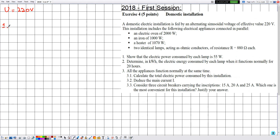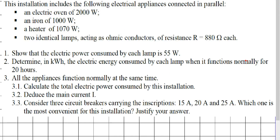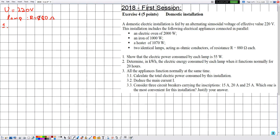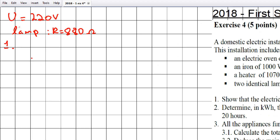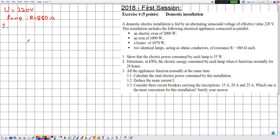In part one, the resistance of the identical lamps is given as R equal to 880 ohms. They are asking us to show that the electric power consumed by each lamp is 55 watts. We have the resistance and the voltage U, so we can calculate the electric power using P equals U squared divided by R. But before using this formula we need to prove it.